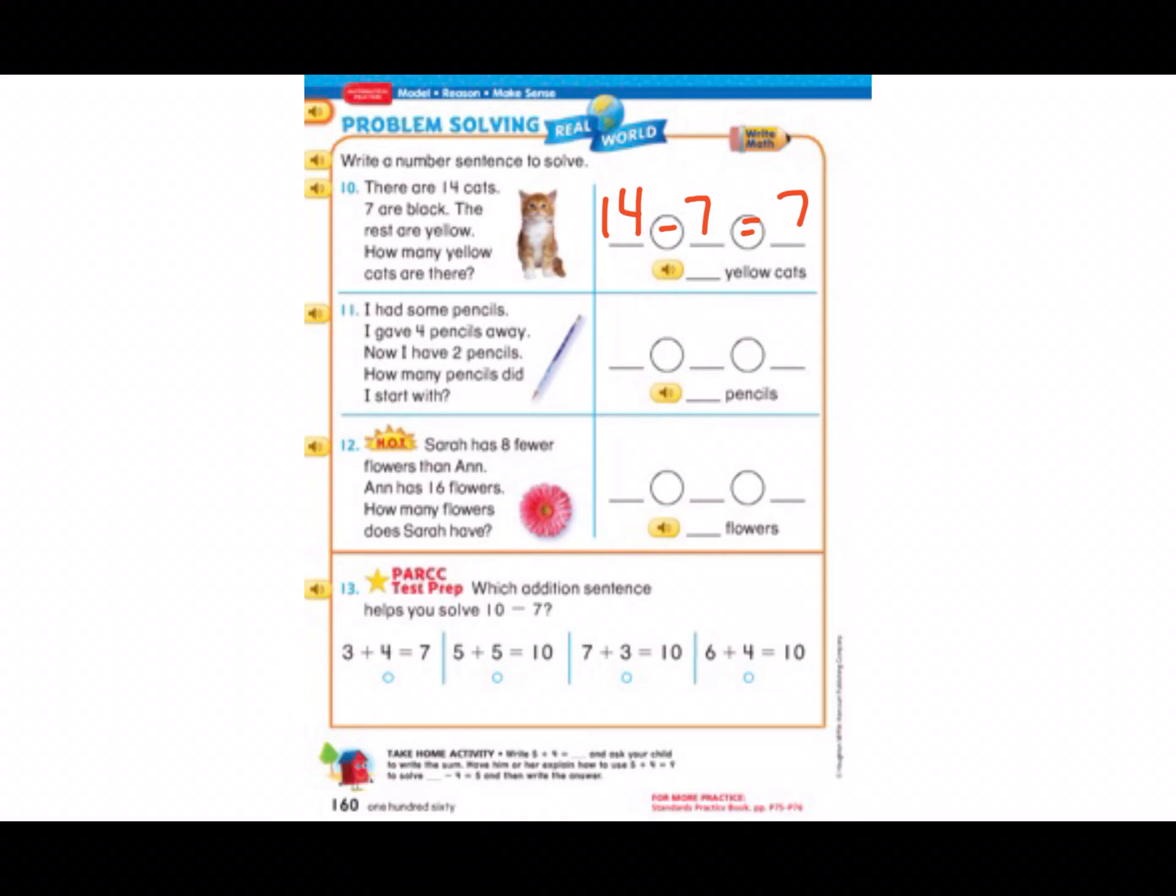Number 11. I had some pencils. I gave 4 pencils away. Now I have 2 pencils. How many pencils did I start with? So we don't know how many they started with, but we know that they gave away 4, which means you're going to be taking away 4, and they only had 2 left. What number did they start with?